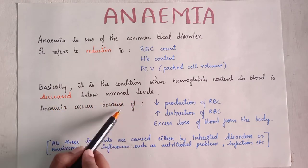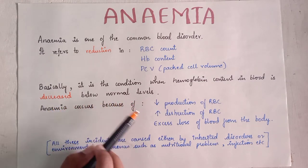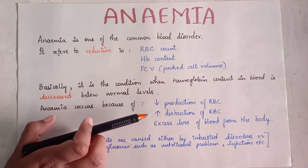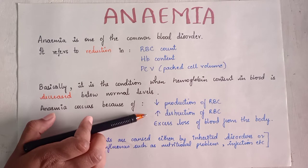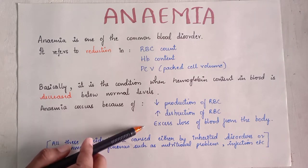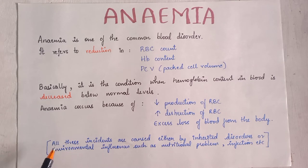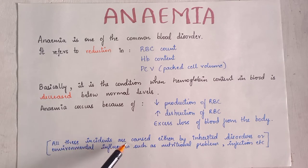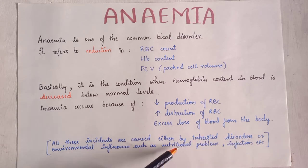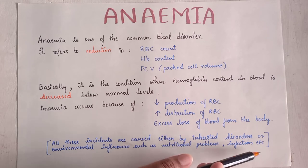Anemia occurs because of decreased production of RBCs, increased destruction of RBCs, and excess loss of blood from the body. These three reasons are responsible. All these are caused either by inherited disorders or environmental influences such as nutritional problems, infections, etc.